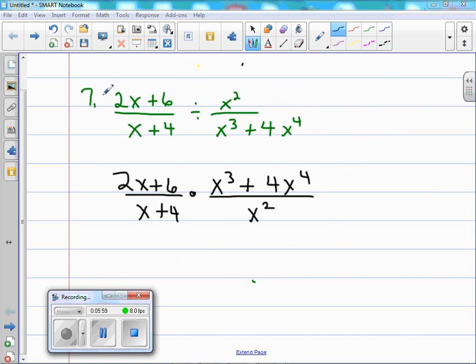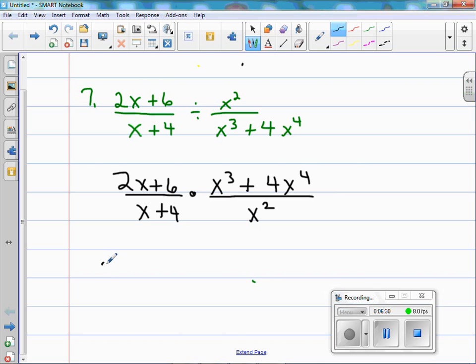This is number 7. You notice in green I have the problem written as it was originally written on the paper. We know it's division, so we're going to have to flip this. So what I did, I turned it over. You see how I've rewritten it. Now let's look at each term and see what can we factor out. Can we factor out something here? Yes, we can take out a 2. So we take out the 2, open parenthesis, and that's going to be x plus 3. And we still have underneath, we still have our x plus 4.